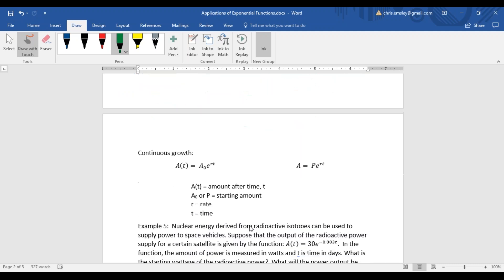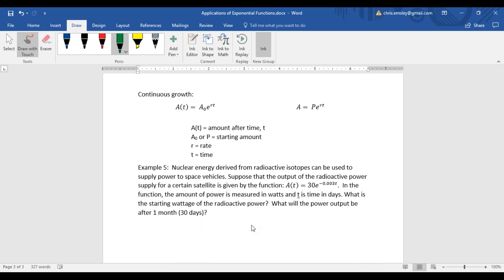We could also talk about things that have what we call continuous growth. When we talk about continuous growth, we change our formula up a little bit. Instead of having a base of 1 plus our rate, our base is now e, which is the natural exponent.